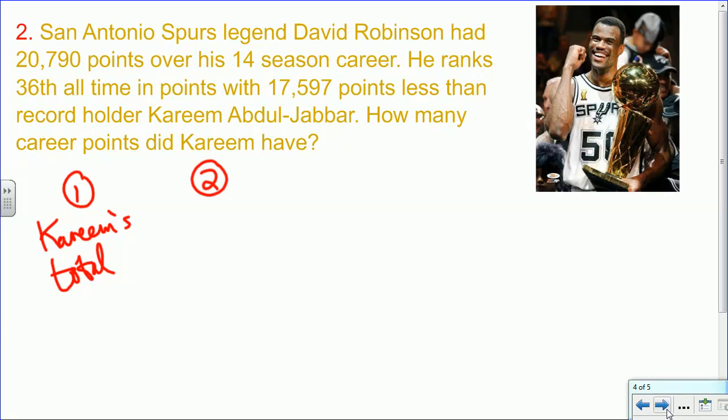Now here's an example, and I chose this one on purpose. We have the word less here, but we're actually not going to be subtracting. If we read this again, we can tell that the record holder is Kareem Abdul-Jabbar, so he should have the most. He should have more than David Robinson. So we need to take David Robinson's total points, and we need to add 17,597. We need to add that difference and make it an addend, and then we'll find out the total that Kareem had. So in this case, we're going to be adding, even though they had that word less there.